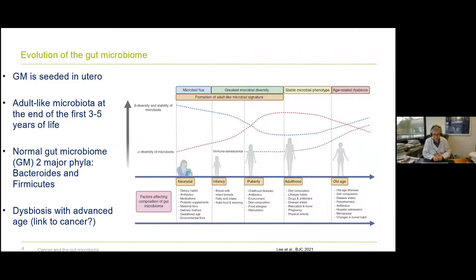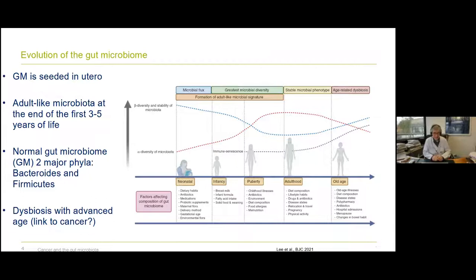When we look at the evolution of the gut microbiome, we see that the microbiome is seeded in utero. It takes up to three to five years of life until we adopt a more or less adult-like microbiome. The normal microbiome constitutes two major phyla: the Bacteroidetes and the Firmicutes. The older we get, the more likely we are to develop so-called dysbiosis. Old age comes with a change in the microbiome, and this might be a link to why cancer originates predominantly at an advanced age.